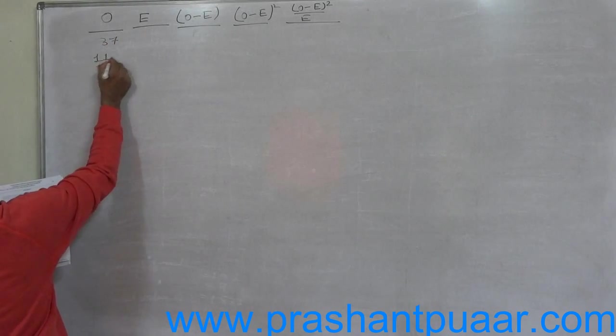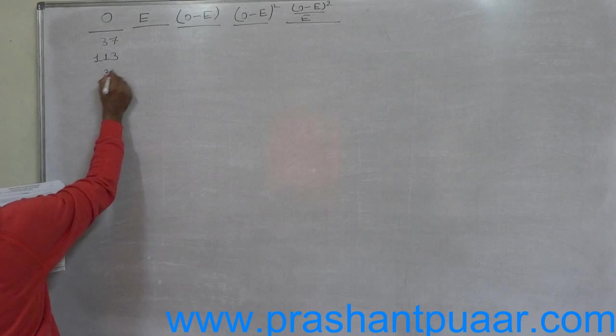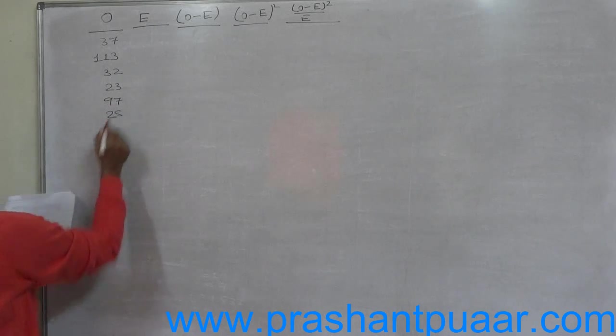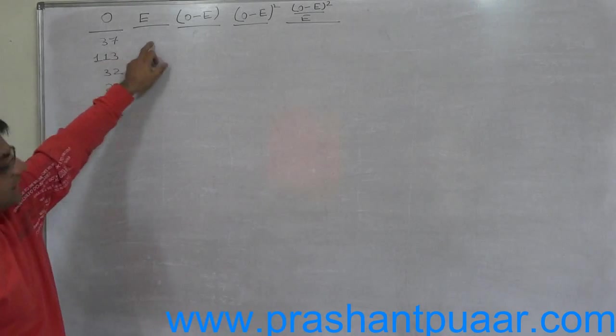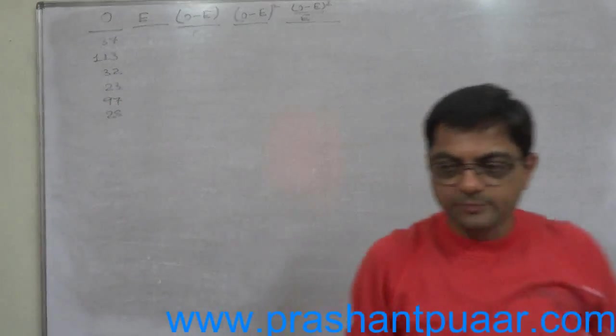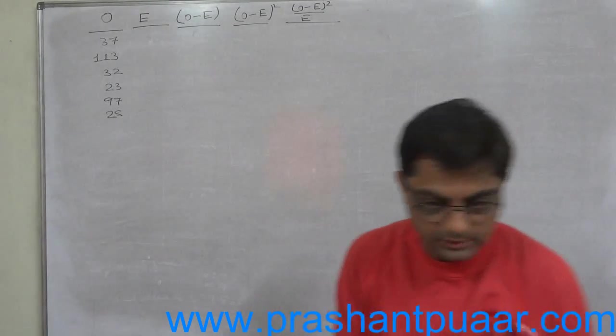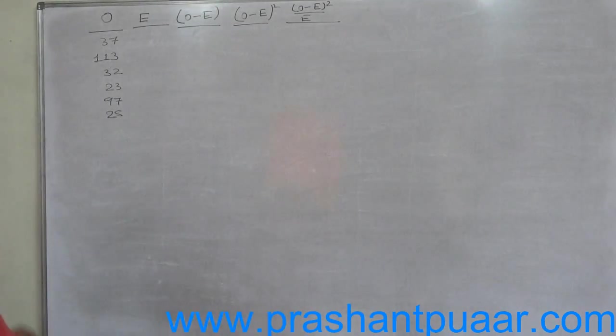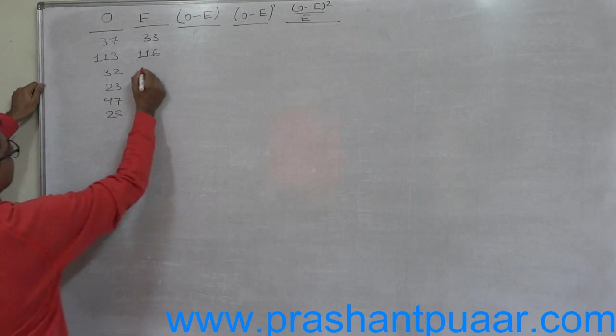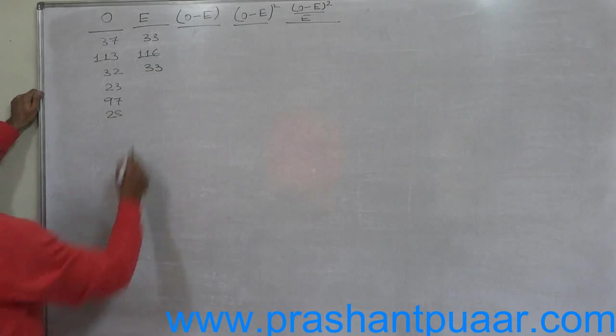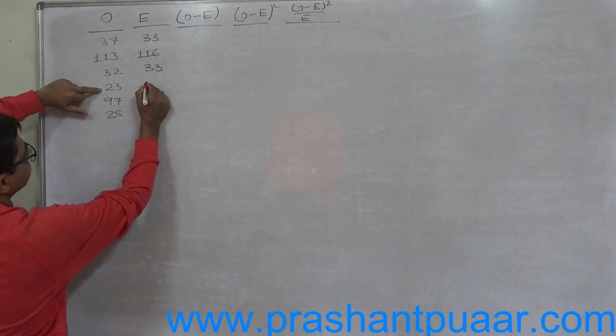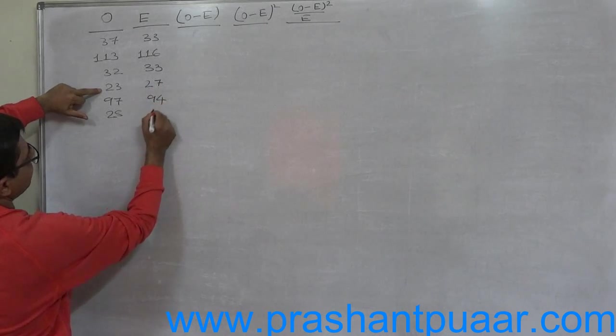The summation of that column O: 37, 113, 32, 23, 97, and 28. Actually, it is advisable to write both the columns simultaneously so that the pair of observed and relevant expected frequency is not broken. Now, can anybody tell me the relevant expected frequencies? This is 33, this is 116, 33, again 27, 94, and last is 27.